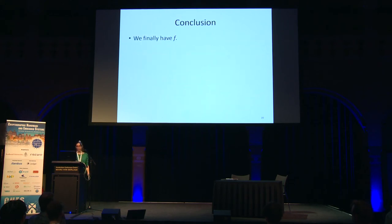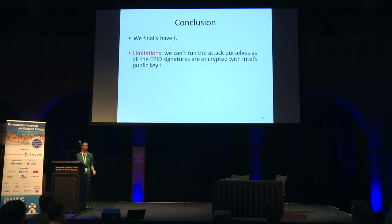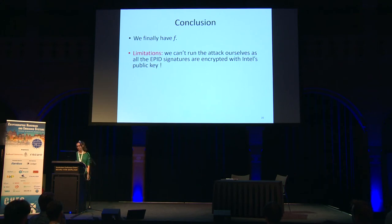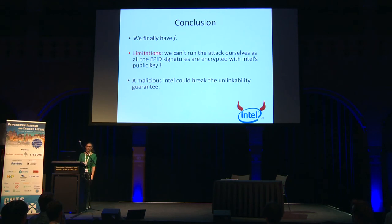So the attacker recovers f. However, this attack has a limitation: Intel encrypts the attestation quotes, so no client can decrypt them and run the attack. The attack can only be run by Intel itself. A malicious Intel, though, can break the unlinkability guarantee of the EPID protocol — which is still a significant finding. Thank you.